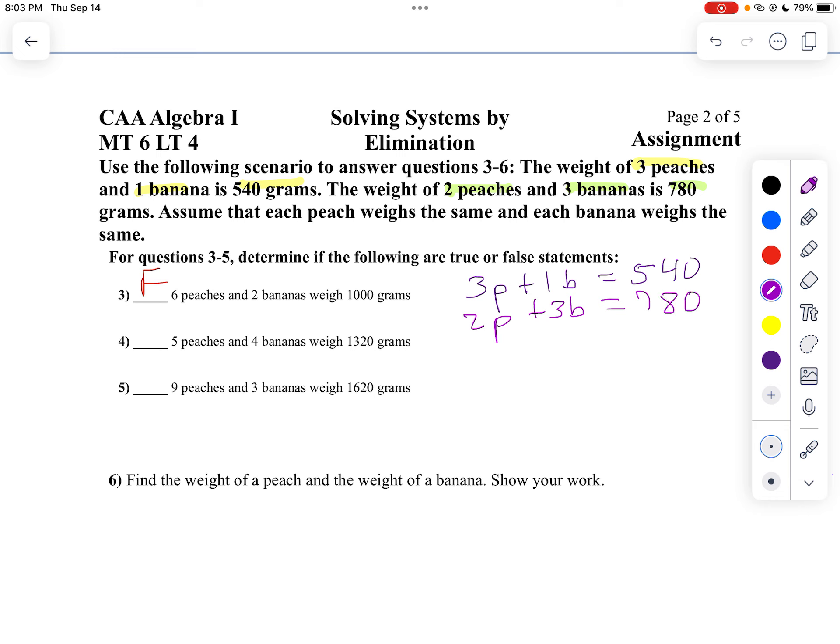And notice I can't get five out of two unless I multiply by a decimal. I don't want to do that. But notice if I add these two equations up, I'll get five peaches plus four bananas. Oh, look at that. That equals 1,320. So problem number four, that's going to be true.